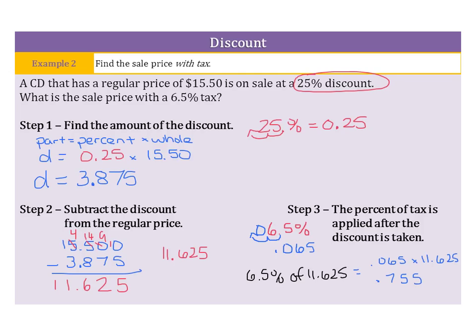So, our tax is 75.5 cents. Add your 11.625 to the 0.755 and you end up with 10, 8, 13, 2, and 1. So, our final answer: $12.38.